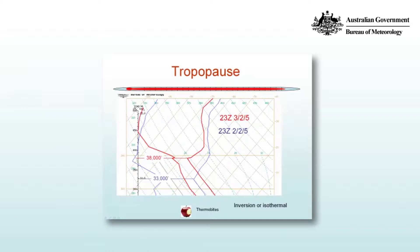We have two balloon flights. The red flight is from 23 UTC, or 10am on the 3rd of February 2005, and the blue line represents the same profile but a day earlier on the 2nd of February.